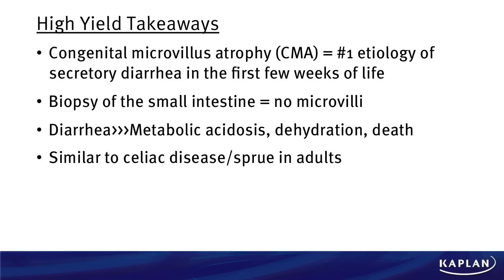You should recognize this is similar to celiac disease or celiac sprue in adults — both have a problem with microvilli. Finally, looking at the other answer choices, you should be able to say: Desmin and Desmoplakin are intermediate filaments, while Dynein and Kinesin are proteins associated with microtubules. This is a high-yield question with a lot of good basic science concepts that will lead to more points for you on test day.